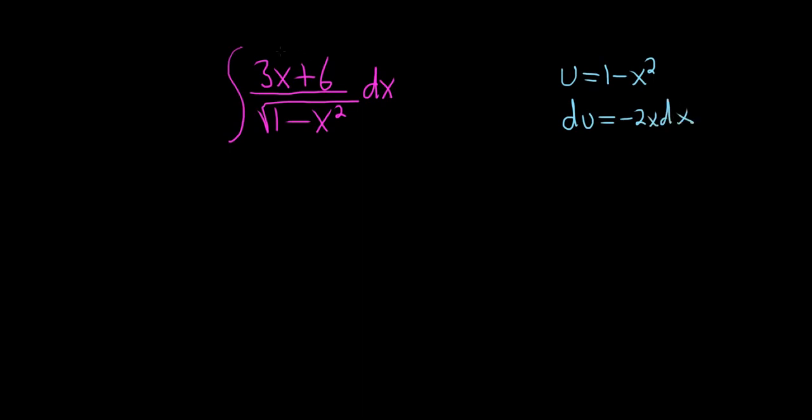Except you have a 3x plus 6 here so it doesn't quite work out, especially the 6. The 6 kind of ruins everything. So what you want to do is break it up as follows. So 3x over the square root of 1 minus x squared dx plus 6 over the square root of 1 minus x squared dx.